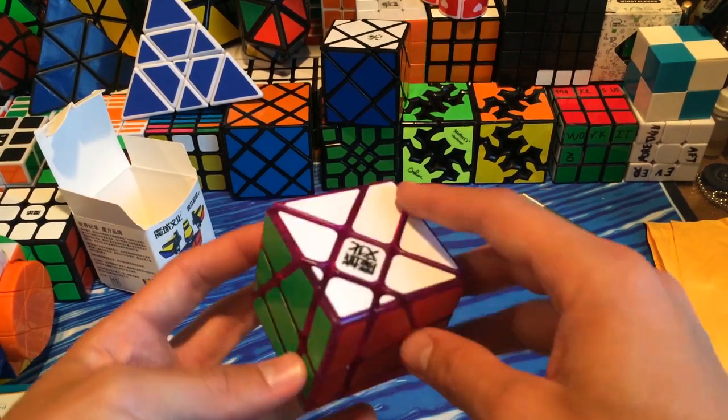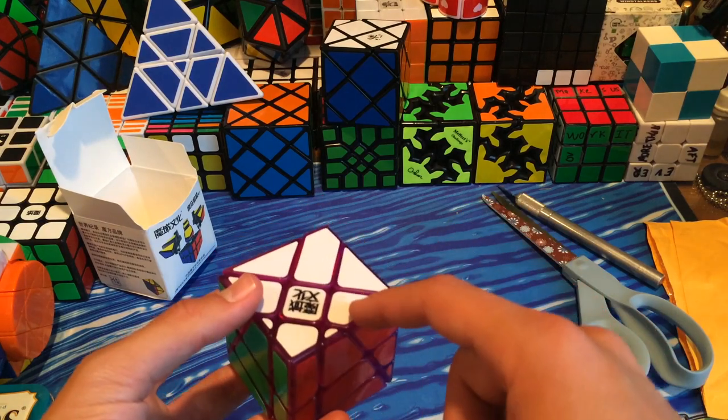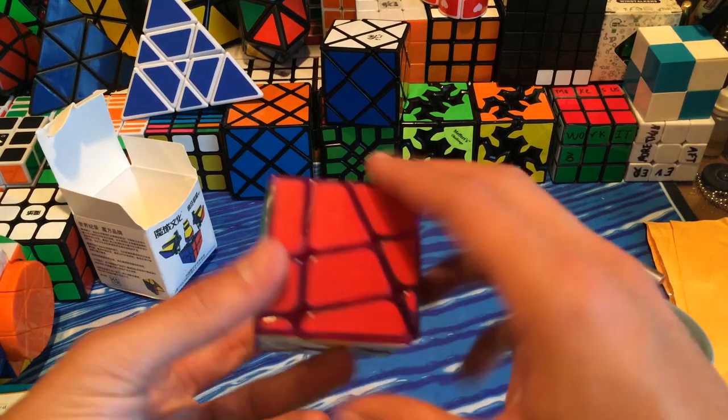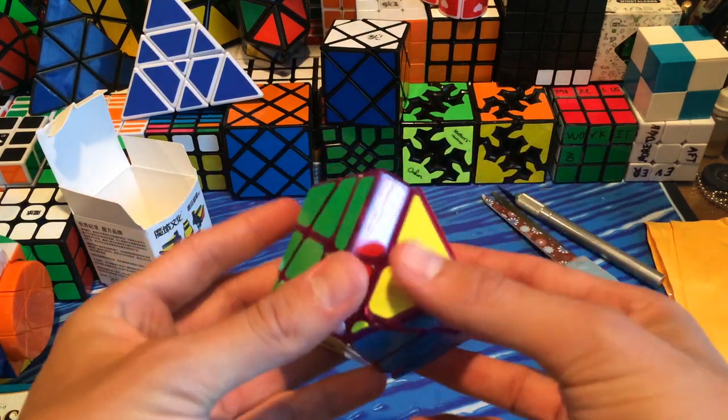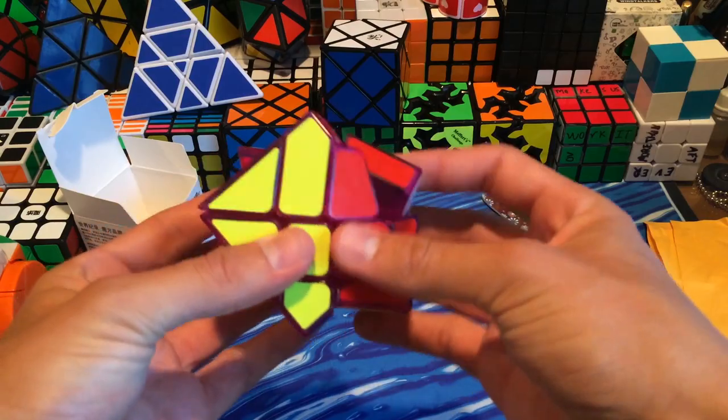Anyways, it's just a 3x3 mod. Here's the cross, these four are edges and the corners are those. It's just a 3x3 with purple plastic. Lighttake I think only had 20 of them, and I already did something so I'm just going to go ahead and scramble it right now.